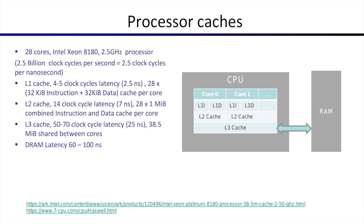When data is not found in any cache, it is retrieved from RAM. RAM is farther out and has a latency of about 60 to 100 nanoseconds. This matters because if processes are constantly fetching data from RAM, the CPU's speed advantage is wasted. If a program can keep data in the caches, it will run much faster. This becomes important when we discuss process context switching.